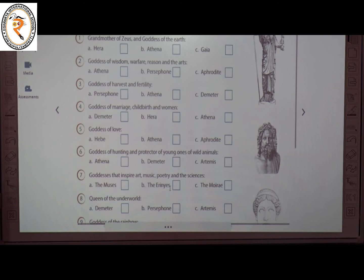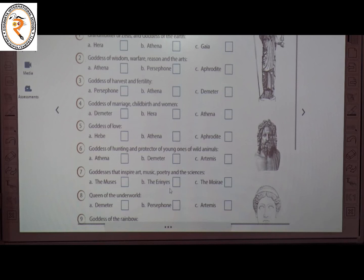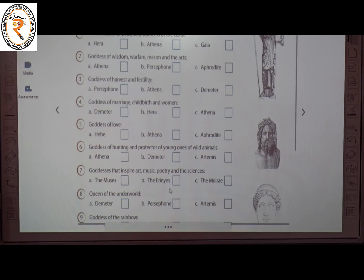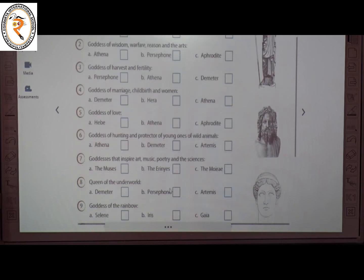The second one: Goddess of Wisdom, Warfare, Reason and the Arts. The answer is A — Athena. The third one: Goddess of Harvest and Fertility. The answer is C — Demeter.